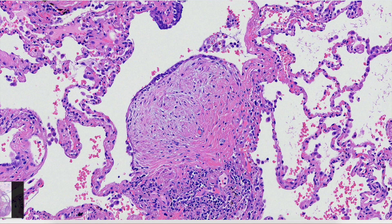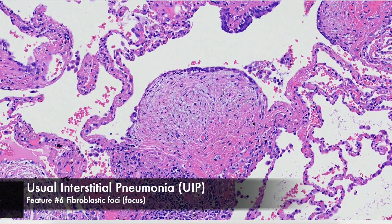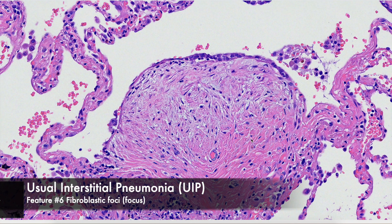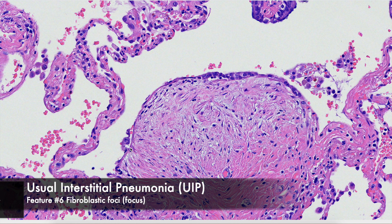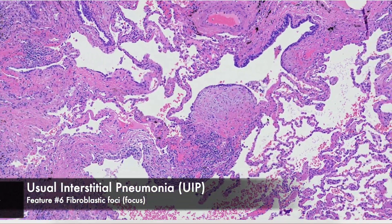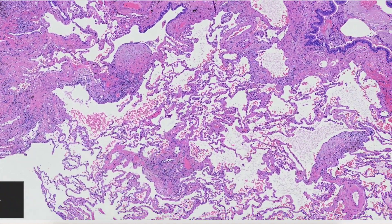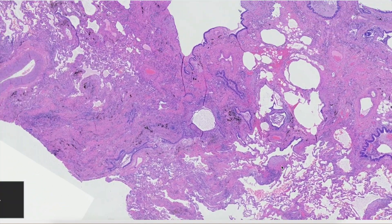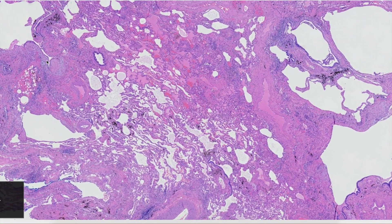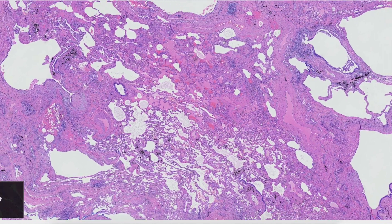Zooming into higher power, you can see a fibroblastic focus — a loose collection of fibroblasts with a grayish color, as opposed to the dark pink fibrotic areas. These tend to push into air spaces and can have metaplastic epithelium overlying them. At lower power, you can see multiple fibroblastic foci as loose, grayish areas within the dense fibrosis.